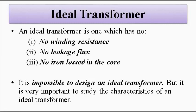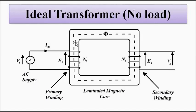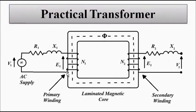It is impossible because there will always be leakage flux, and there are no iron losses in an ideal transformer. There are two types of losses: copper losses due to winding resistance, and iron losses due to hysteresis and eddy current. An ideal transformer has these three characteristics — no winding resistance, no iron losses, no leakage flux — whereas a practical transformer has winding resistance, iron losses, and leakage flux. It is impossible to design an ideal transformer, but we study it to have a reference for comparison.